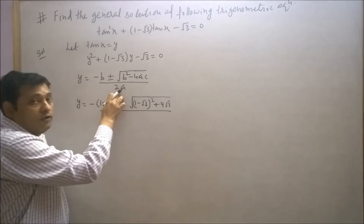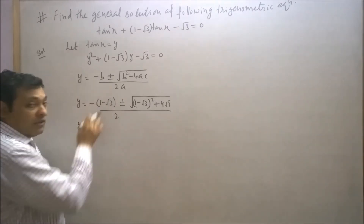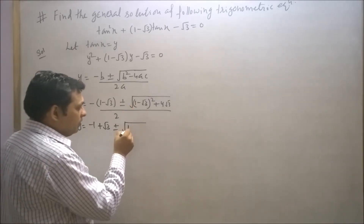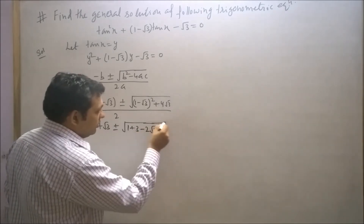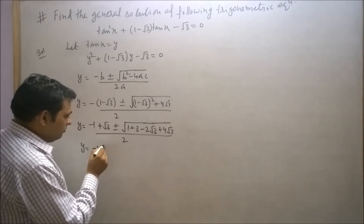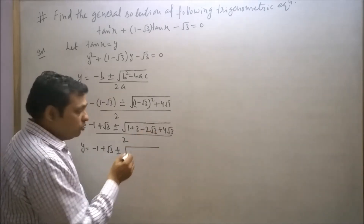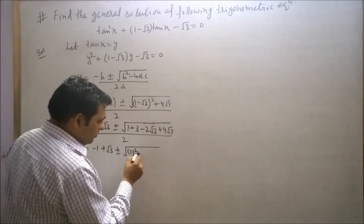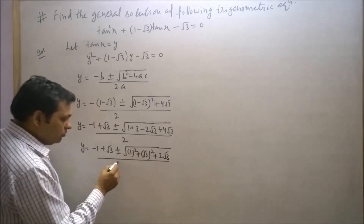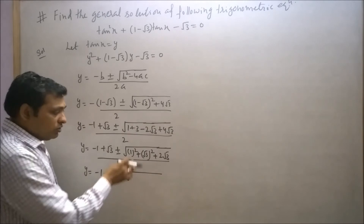So y equals minus(1 - √3) plus or minus the square root of: opening (1 - √3)² gives 1 + 3 - 2√3, and adding 4√3 gives 1 + 3 + 2√3. This simplifies to the whole square of (1 + √3), so the square root is simply (1 + √3).